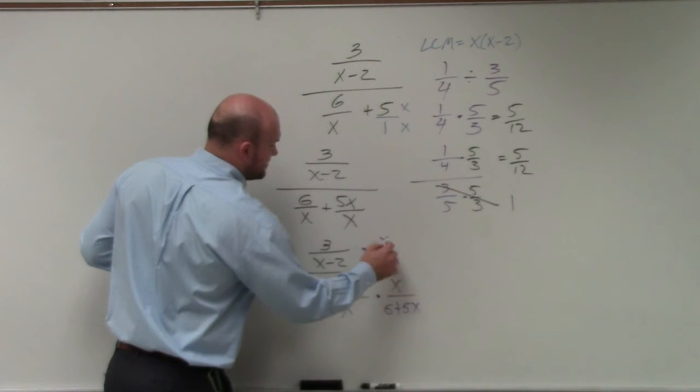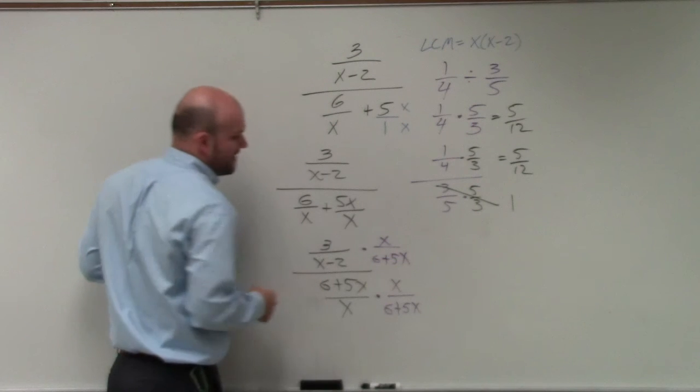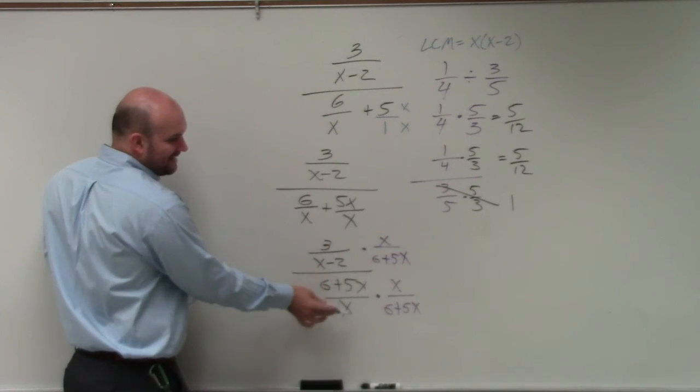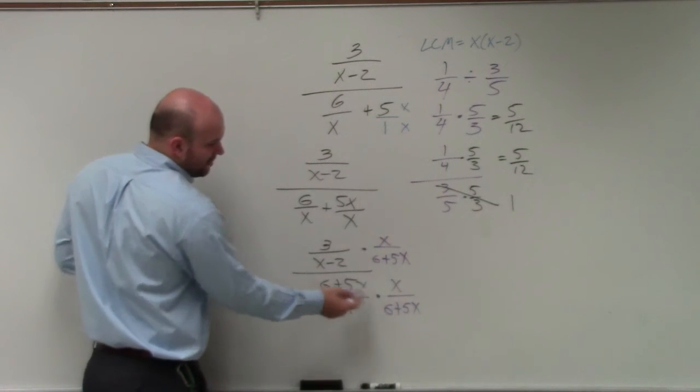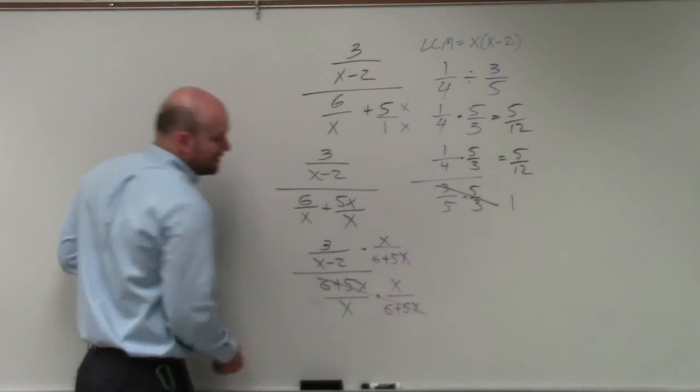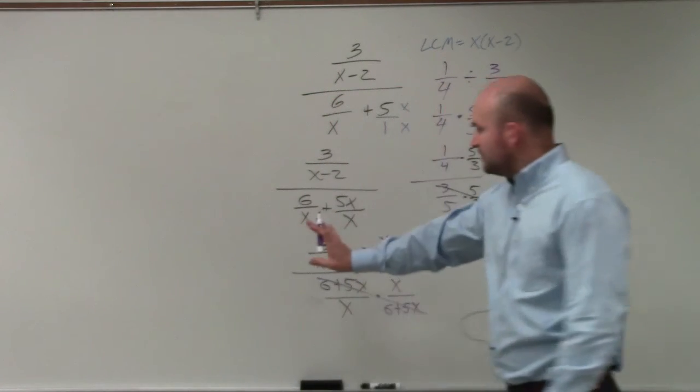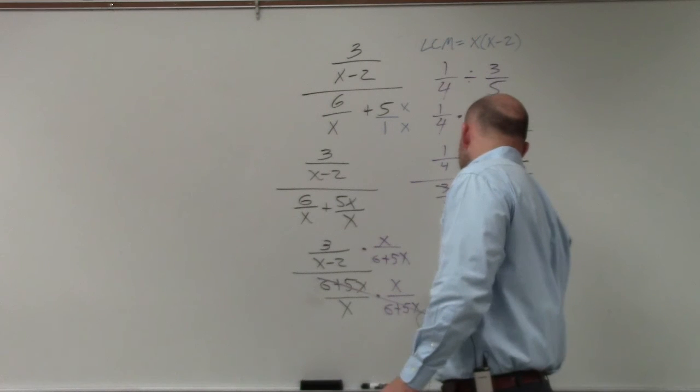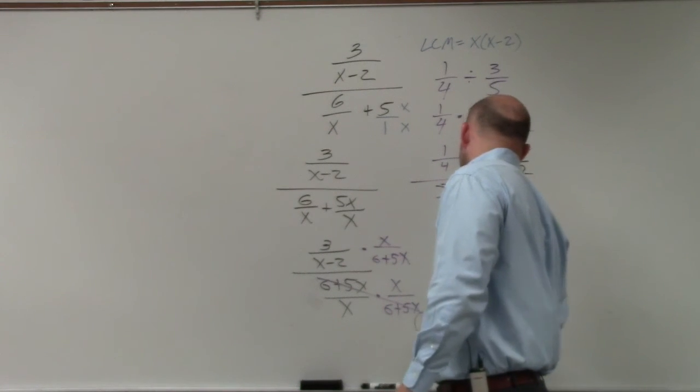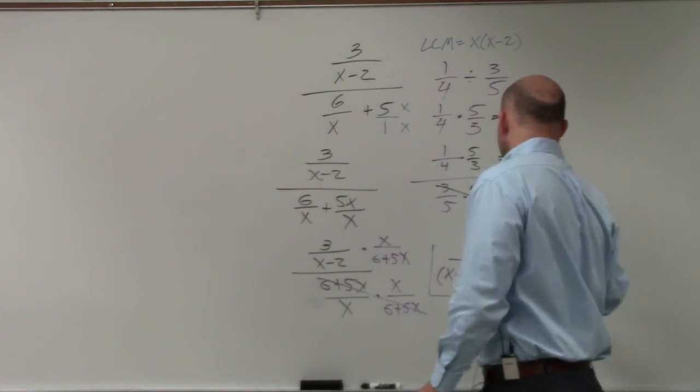And I like this method because I don't really have to expand everything. I can just kind of leave it in factored form. Anything multiplied out or multiplied by its reciprocal is going to go to 1. And then, obviously, we could expand this out. But when you're multiplying fractions, you multiply your numerator times your numerator and your denominator times your denominator. So this answer is acceptable.